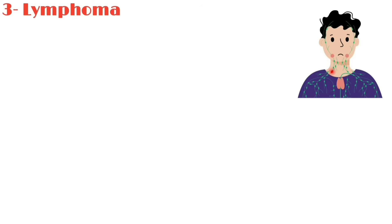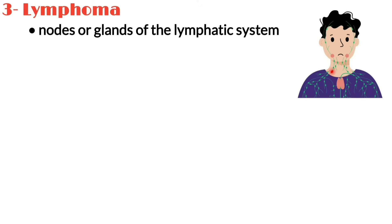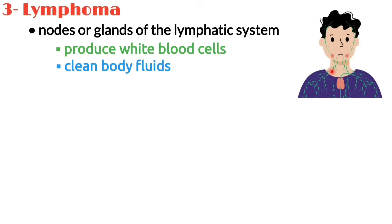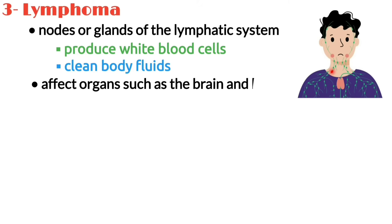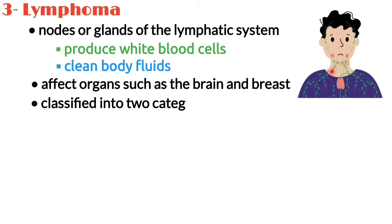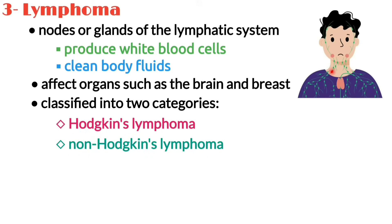Number three is lymphoma. A lymphoma refers to a cancer that originates in the nodes or glands of the lymphatic system, whose job it is to produce white blood cells and clean body fluids, or in organs such as the brain and breast. Lymphomas are classified into two categories: Hodgkin's lymphoma and non-Hodgkin's lymphoma.